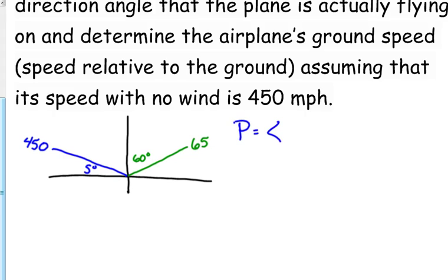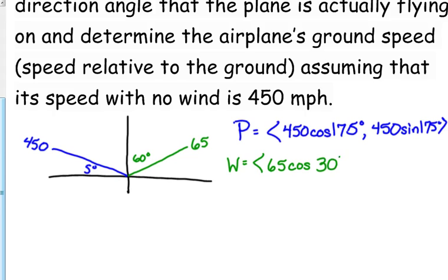So the plane would be, its magnitude is 450 cosine of what? Not five, 175. Very good. And this is part of the reason why I want you to do this guys, I need to see your work. Because I'm sure someone is going to make a mistake and I need to see what mistake it was. If you at least write down what you typed into the calculator it will help. 65 cosine of 30 and 65 sine of 30.